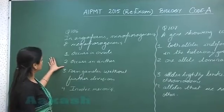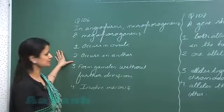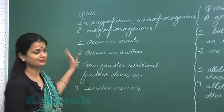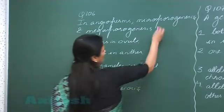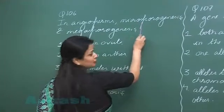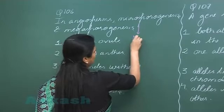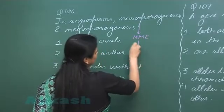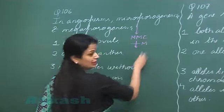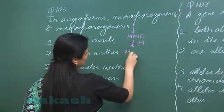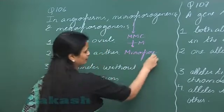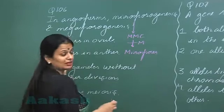Question number 106: In angiosperms, microsporogenesis and megasporogenesis. Microsporogenesis is the process in which the microspore mother cell undergoes meiosis and results in the formation of haploid microspores.